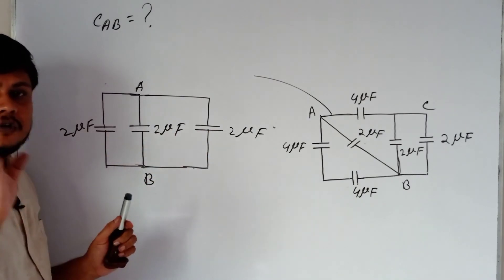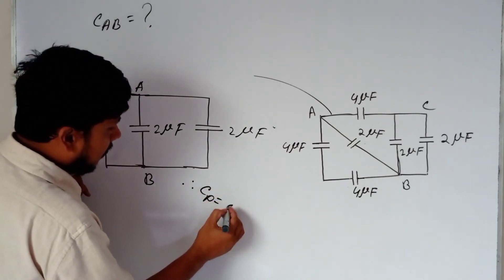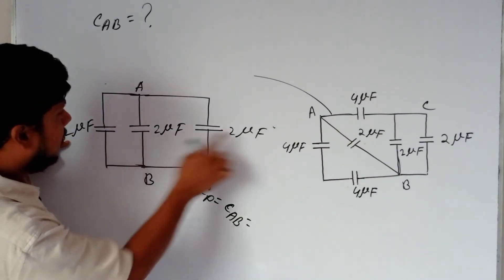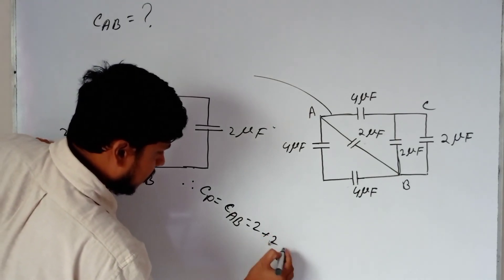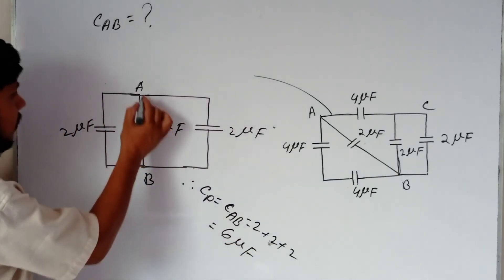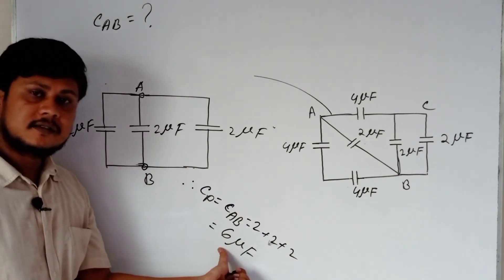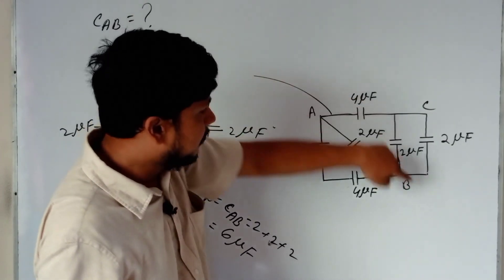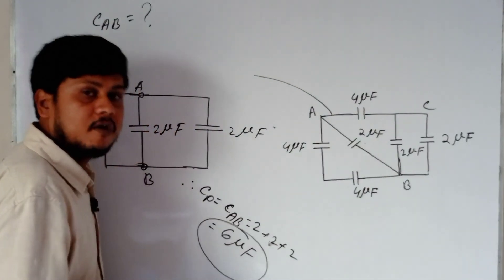All the capacitors are in parallel combination. For parallel combination, Cp equals CAB. Applying the parallel formula, the total is 2 plus 2 plus 2 equals 6 microfarad. So the capacitance between A and B, which is CAB, equals 6 microfarad.